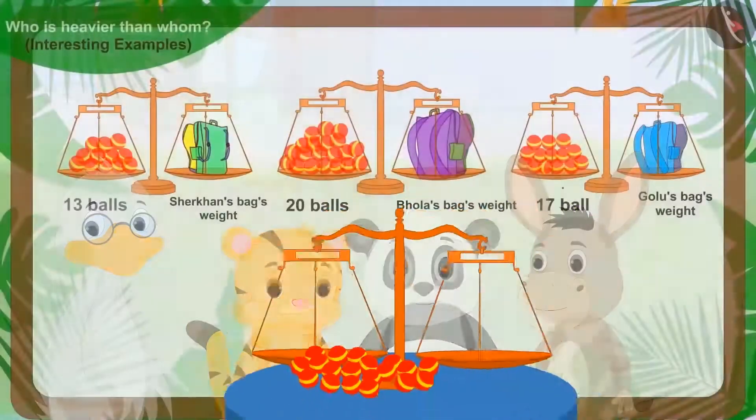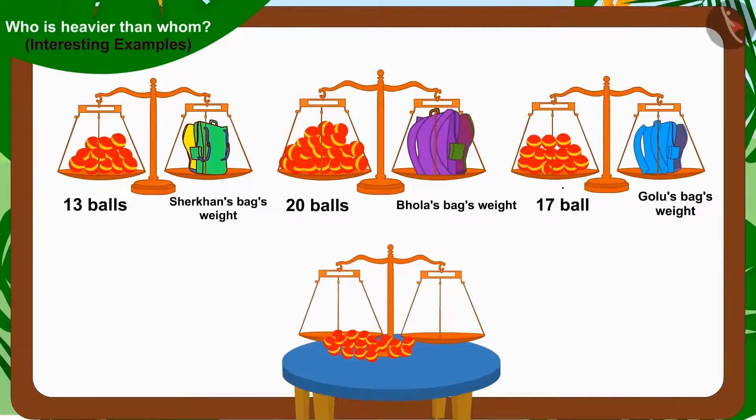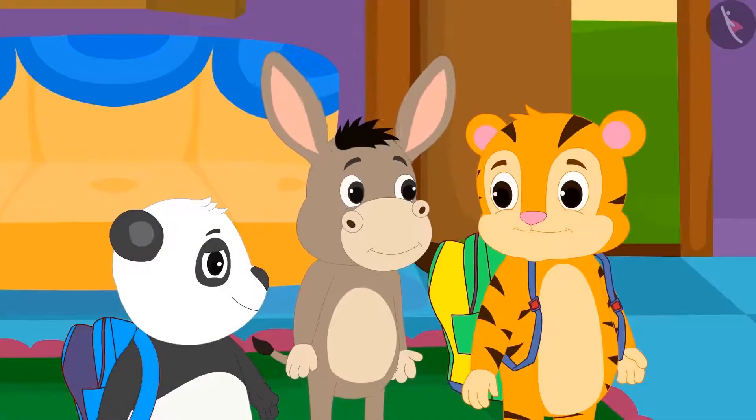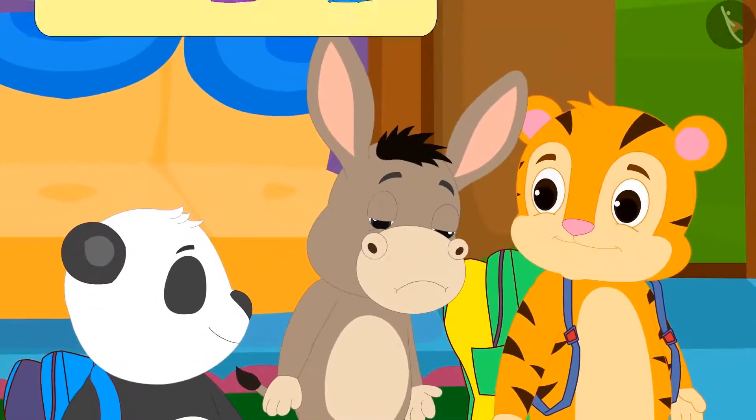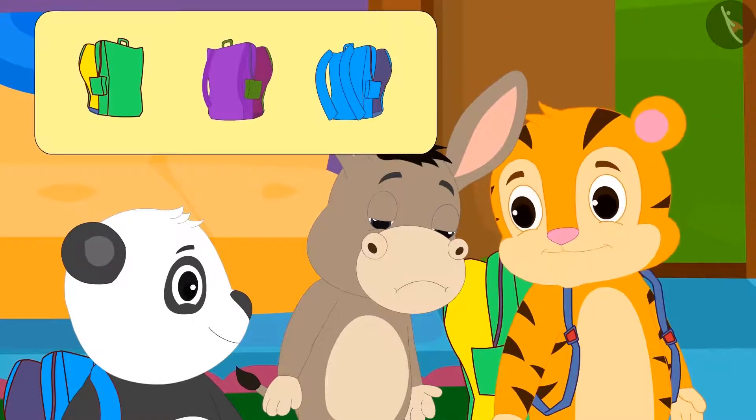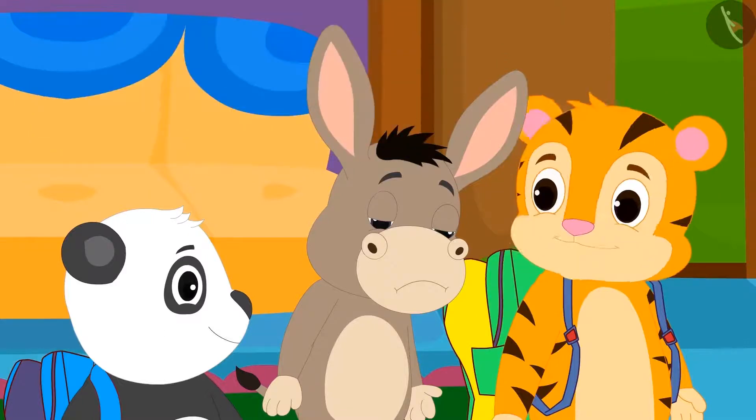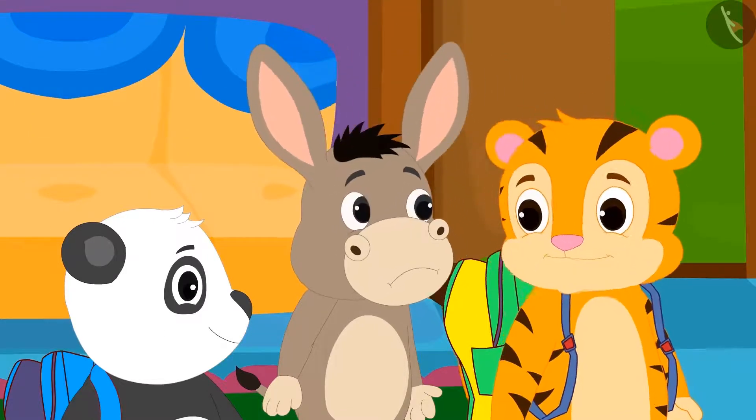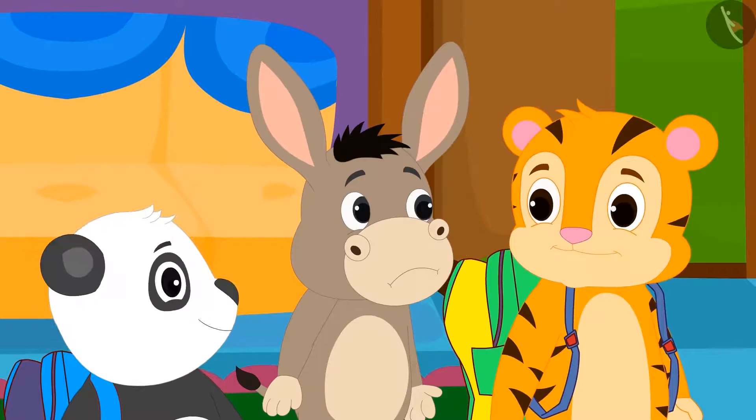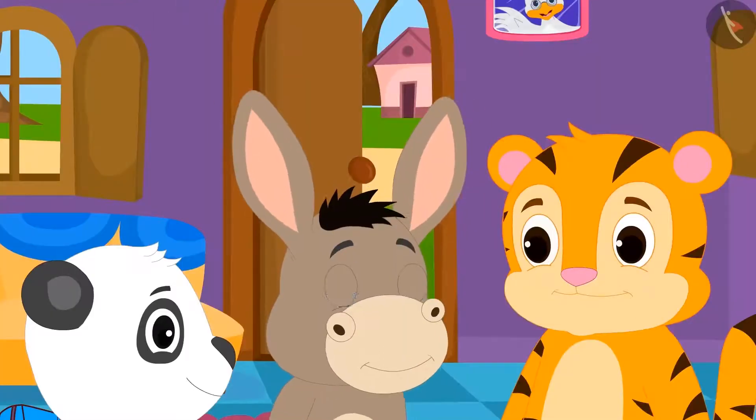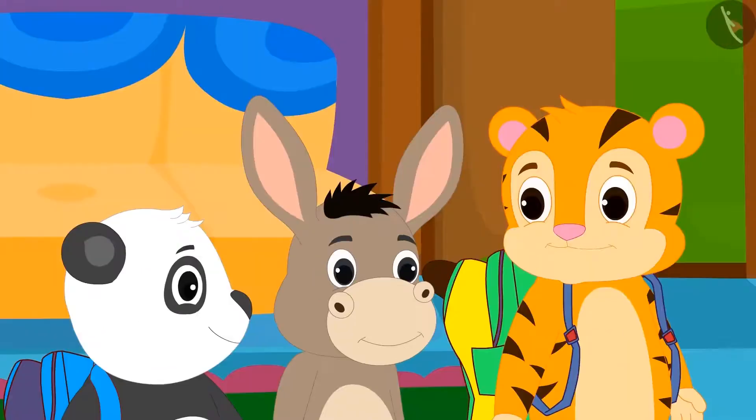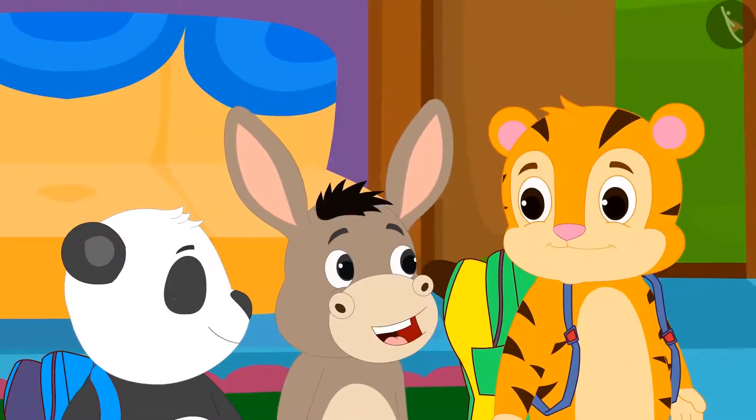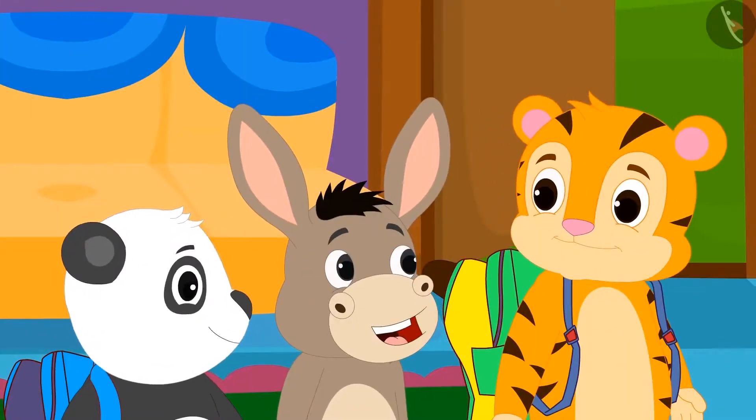Uncle taught the children to compare the weight of items using weighing balance. Finally, Sher Khan and Golu realized that Bhola's bag was indeed heavier than their bags. Knowing this, Sher Khan and Golu told Bhola that they would carry his bag for some distance and help Bhola to lift the weight of his bag.